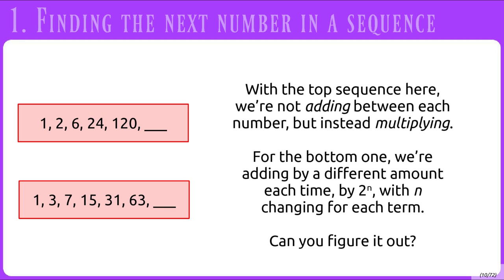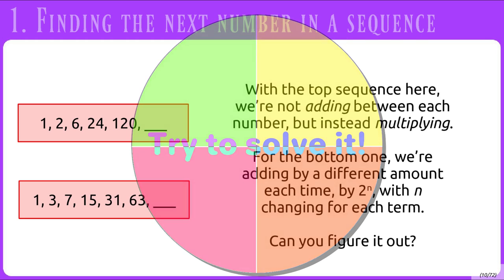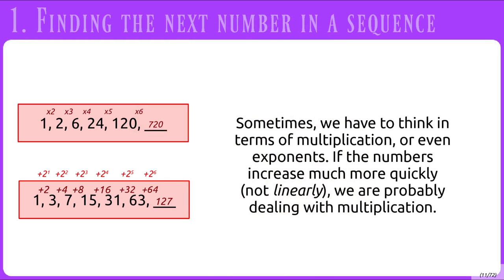These two are a little bit harder still. With the top sequence, we're not adding between each number but instead multiplying. For the bottom one, we're adding by a different amount each time — by 2 to the n, with n changing each term. If addition isn't working out, sometimes we have to think in terms of multiplication or even exponents. If the numbers aren't increasing linearly, we are probably dealing with some form of multiplication.